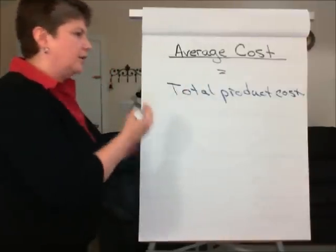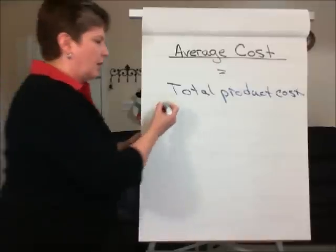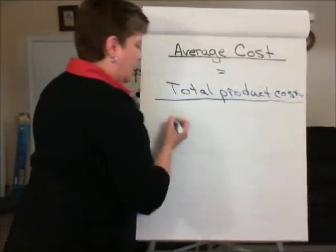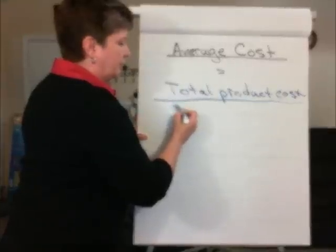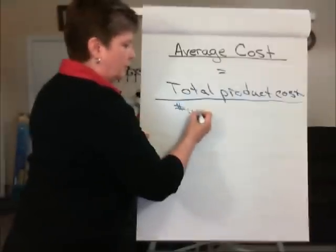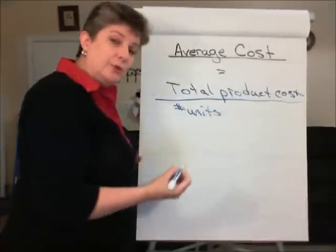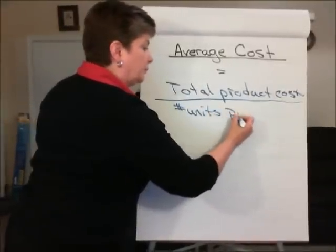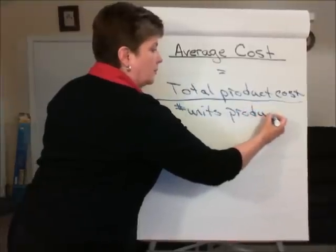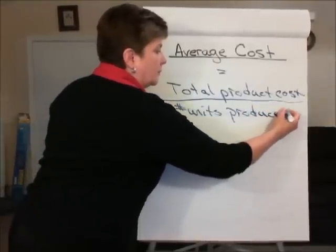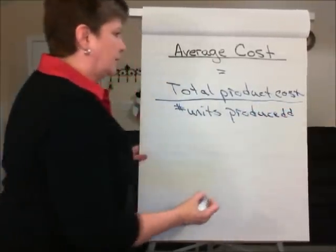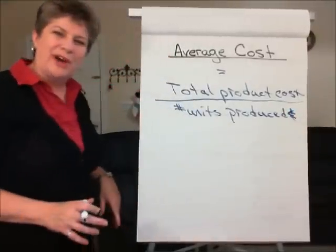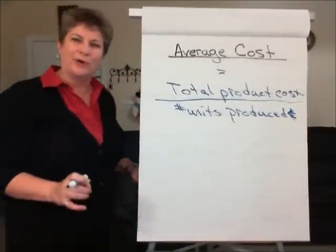So we take all of those costs — the total product cost — and divide by the number of units produced during a period, and that gives us our average product cost per unit.